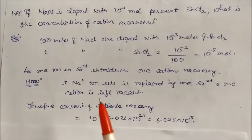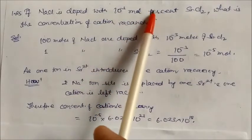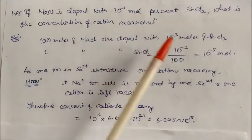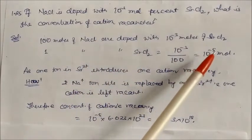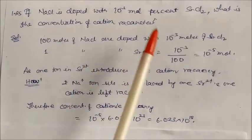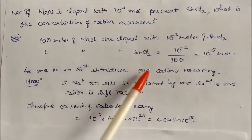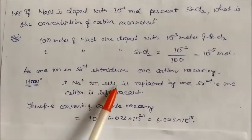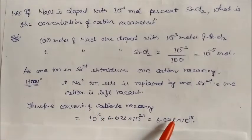NaCl is doped with 10⁻³ mole percent strontium chloride. This means out of 100 moles of NaCl, 10⁻³ moles of SrCl₂ are added — or 10⁻⁵ moles per 1 mole of NaCl. Each Sr²⁺ ion replaces two Na⁺ ions, leaving one cation vacancy. Therefore, concentration of cation vacancies = molar concentration of SrCl₂ × Avogadro's number, giving the number of cation vacancies created.